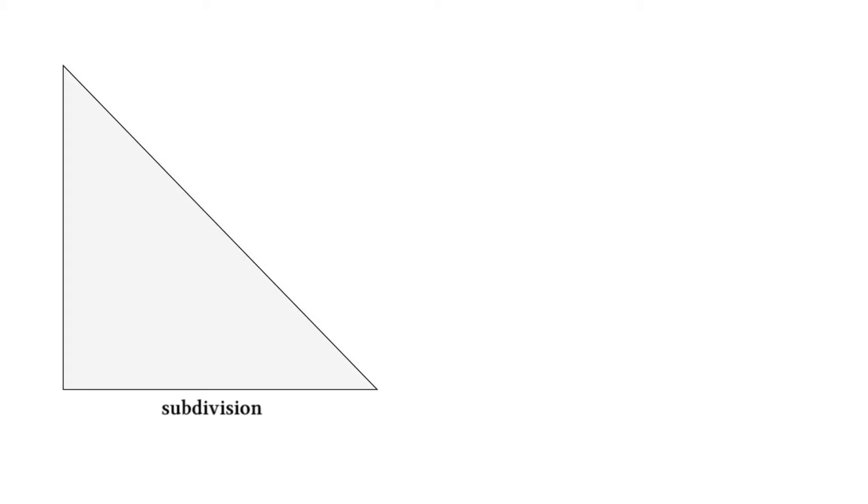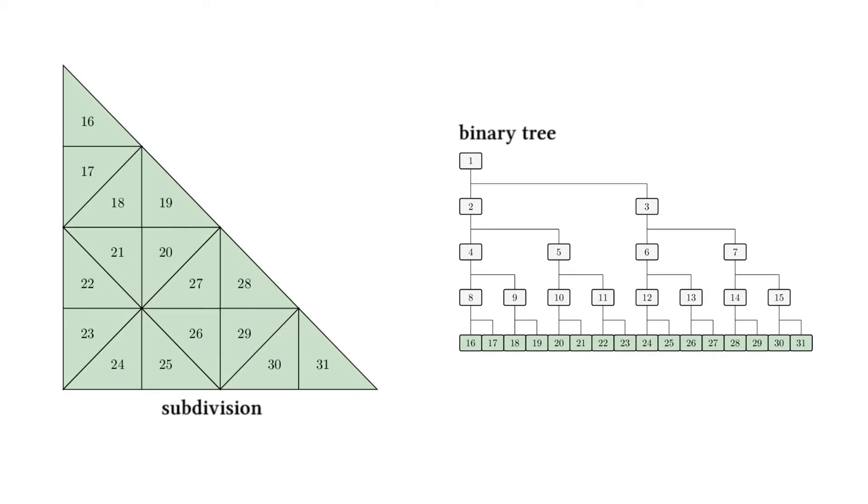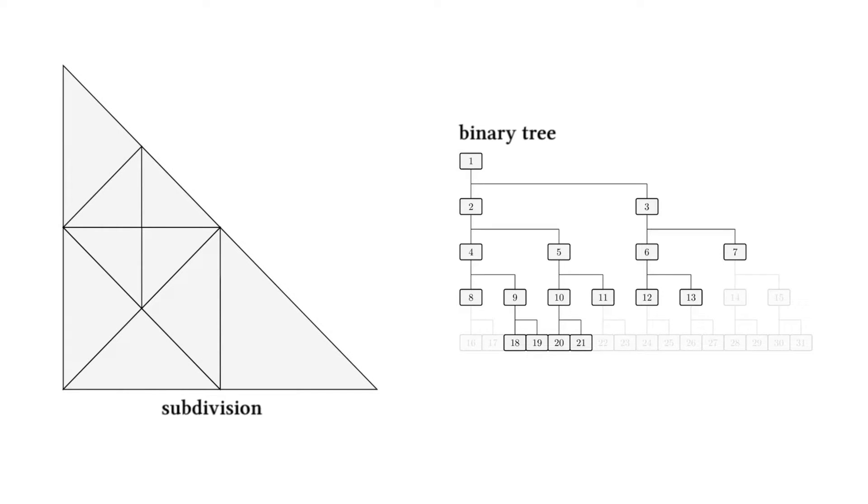Since LEB is a binary subdivision, it can be seen as a binary tree that grows along subdivision depth. Under the binary tree interpretation, only the leaf nodes represent triangles. This is always true, even in the case of adaptive subdivision.